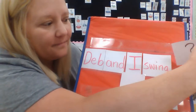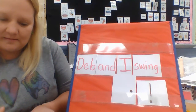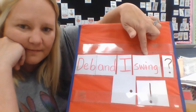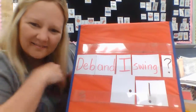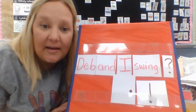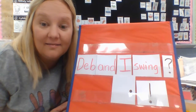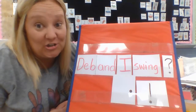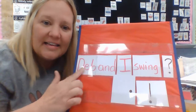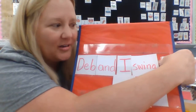So which one is going to go at the end of this sentence? Let's try the question mark: Deb and I swing? Is that a question? That's not a question. If the sentence said, 'Will Deb and I swing?' or 'Can Deb and I swing?' or 'Do you know how to swing?' — that's a question. This is not a question sentence; they're not asking a question. They're telling us something. It's a statement sentence, so no, it's not going to be a question mark.